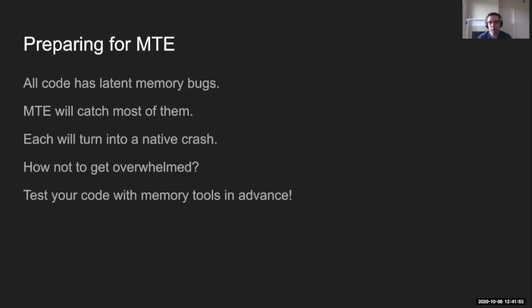It's a known fact that all code has lots of memory bugs. Code that has not been well tested with memory tools typically has a lot of them. MTE, when enabled, will catch all of them with a pretty high probability. It's not deterministic because there is only a limited number of tags, but the probability of detecting any bug is very high — more than 90%. So simply enabling MTE in your application is likely to make it crash a lot. So how do you not get overwhelmed by this?